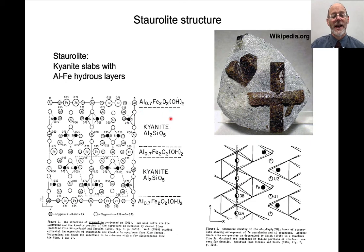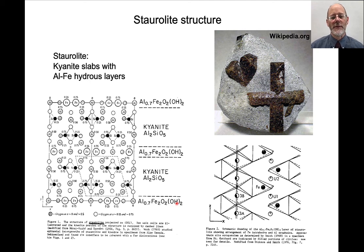Staurolite has kyanite slabs running through the middle of it, connected with intervening layers of aluminum-iron-magnesium oxyhydroxide: a kyanite slab, oxyhydroxide layer, kyanite slab, oxyhydroxide layer, and so on. This means kyanite and staurolite can be found growing together in close association — again, different from andalusite and sillimanite. They also happen to have rather similar optical characteristics: very similar relief and both have low interference colors. Of course, staurolite is typically yellow in thin section, while kyanite normally has no color in thin section.